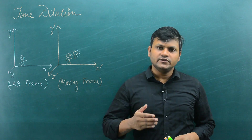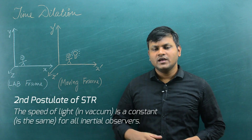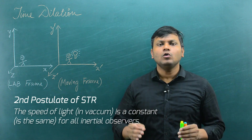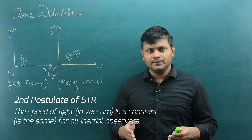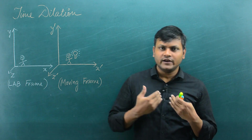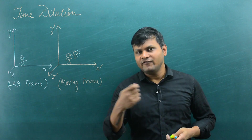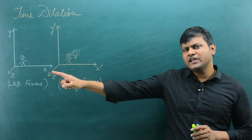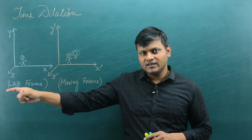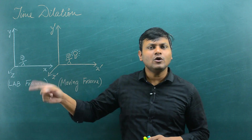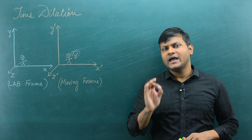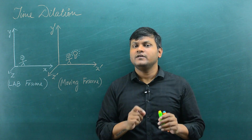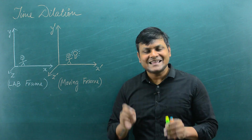The second postulate of Special Theory of Relativity tells us that the speed of light in vacuum is the same for all inertial observers. It means that if I as an observer at rest measure the speed of light in vacuum, I will measure it to be C. If another observer traveling at very high speeds measures the speed of light in vacuum, he will also measure it to be C. Two observers in relative motion will both measure the speed of light to be exactly the same.